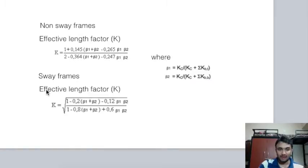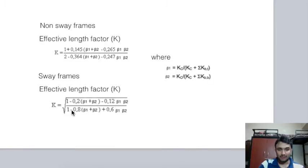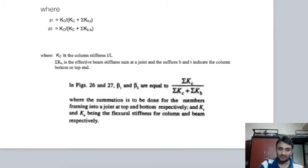For sway frames, the effective length factor is: k = √[(1 − 0.2(β1 + β2) − 0.12·β1·β2) / (1 − 0.8(β1 + β2) + 0.6·β1·β2)], where β1 and β2 are defined by the column and beam stiffnesses at the top and bottom joints.